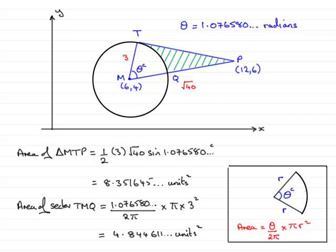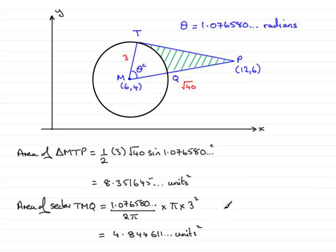Okay. So, we're on the final part now. So, I'll just remove the formula for the area of the sector. And all we need to do now is to get the shaded area, TPQ. Let's just say, area TPQ. Is to take the area of the triangle and subtract the area of the sector. So, I'll just write that in. I'm not going to have much room here, actually. So, just squeeze it in as 8.351645, and so on. And then I'll just put minus the 4.844611, and so on.